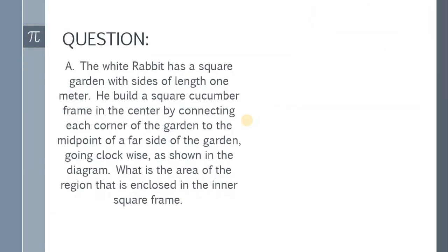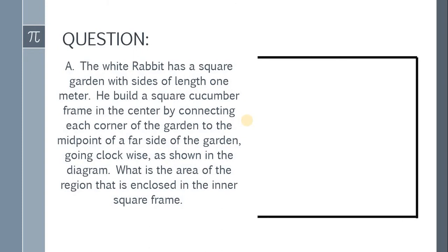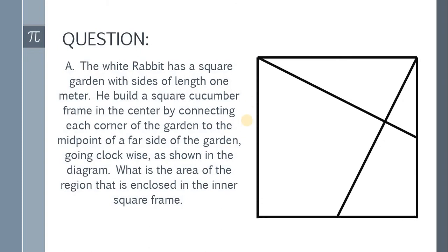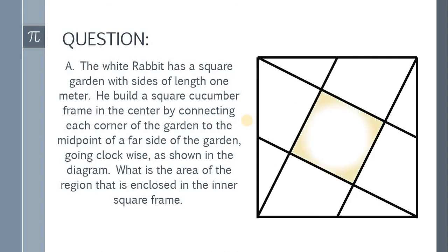Here's the question. The white rabbit has a square garden with side length of 1 meter. He built a square cucumber frame in the center by connecting each corner of the garden to the midpoint of a far side of the garden, going clockwise as shown in the diagram. Now the question is, what is the area of the region that is enclosed in the inner square frame?